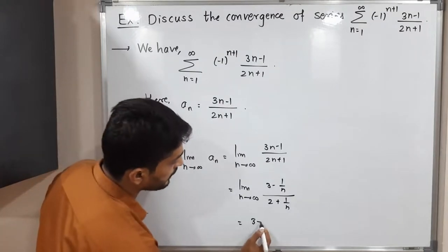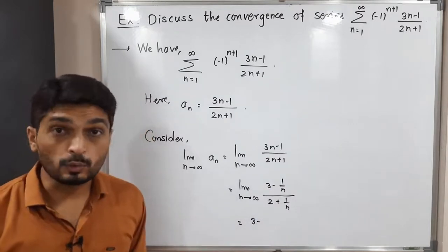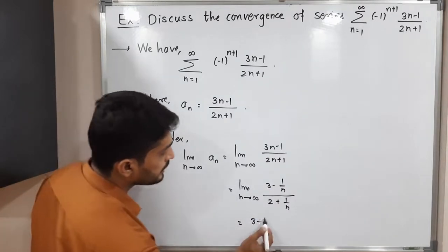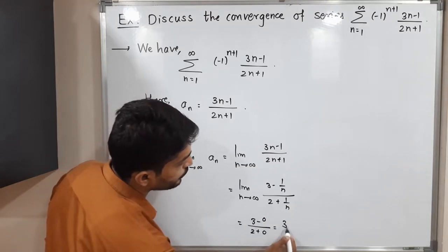So this is equal to 3 minus, you know that, if you take limit n tends to infinity 1 by n, it will be 0, since 1 upon infinity is 0. Here same thing will happen, 2 plus 0, so 3 by 2.